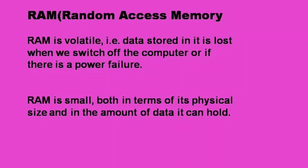First one is RAM. The expansion of RAM is Random Access Memory. RAM is volatile memory — that is, data stored in it is lost when we switch off the computer or if there is no power. RAM is small both in terms of its physical size and in the amount of data it can hold.